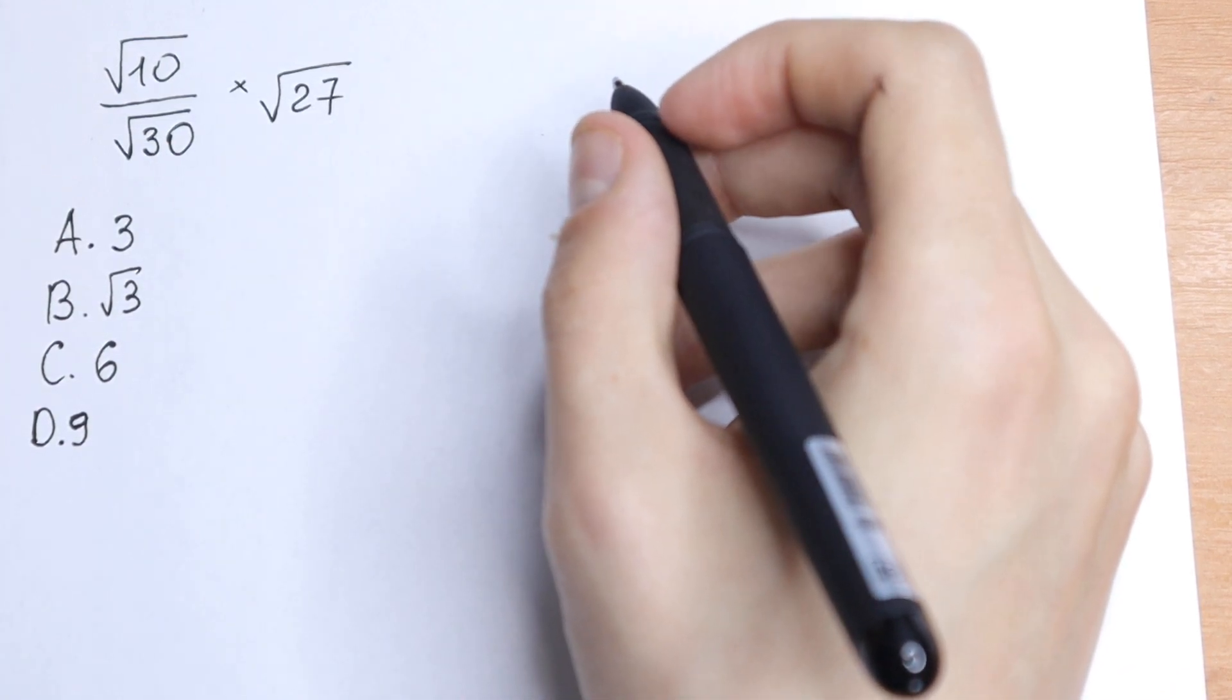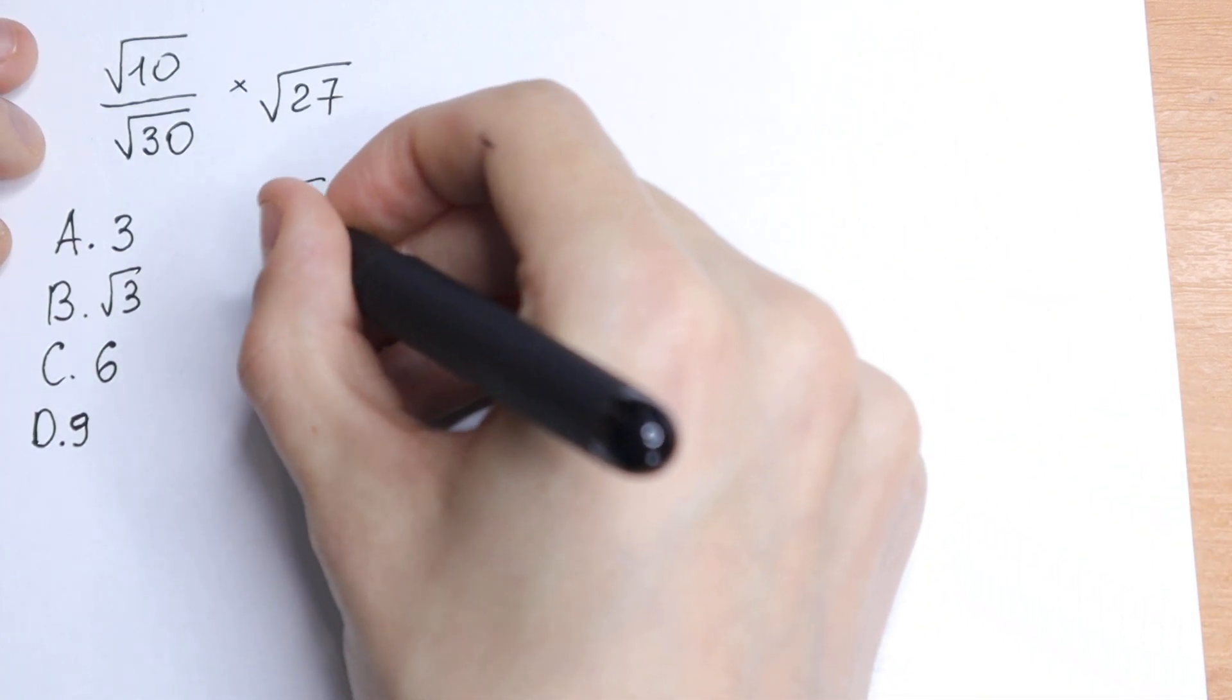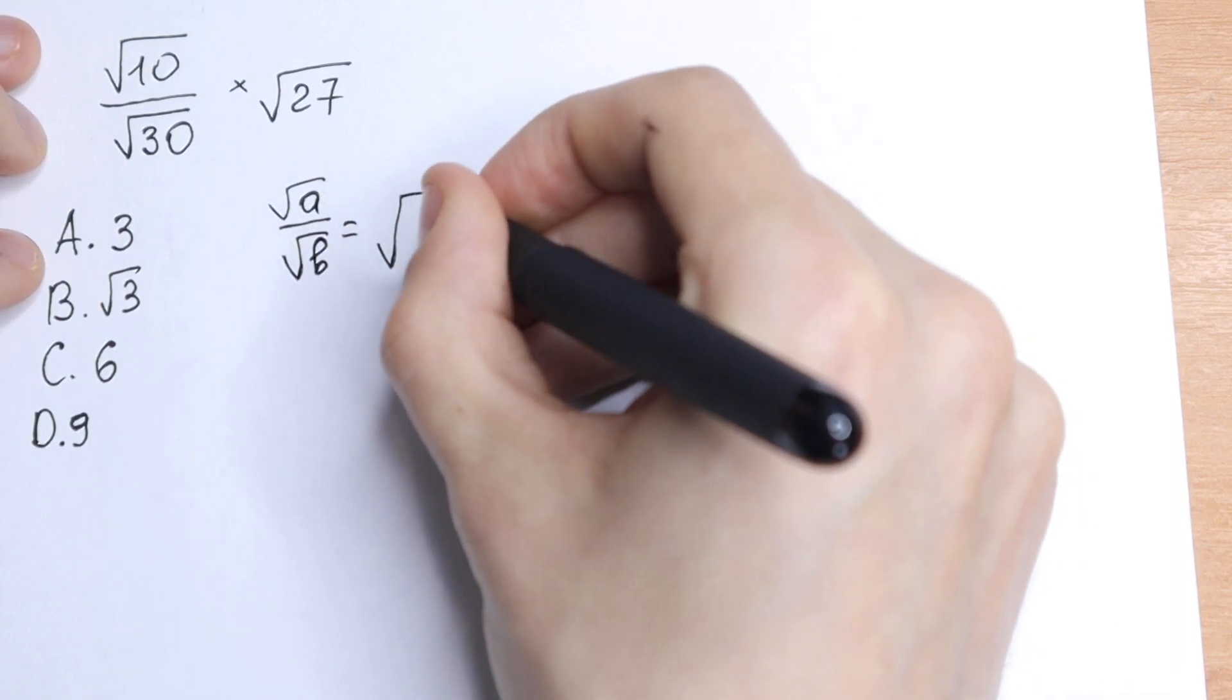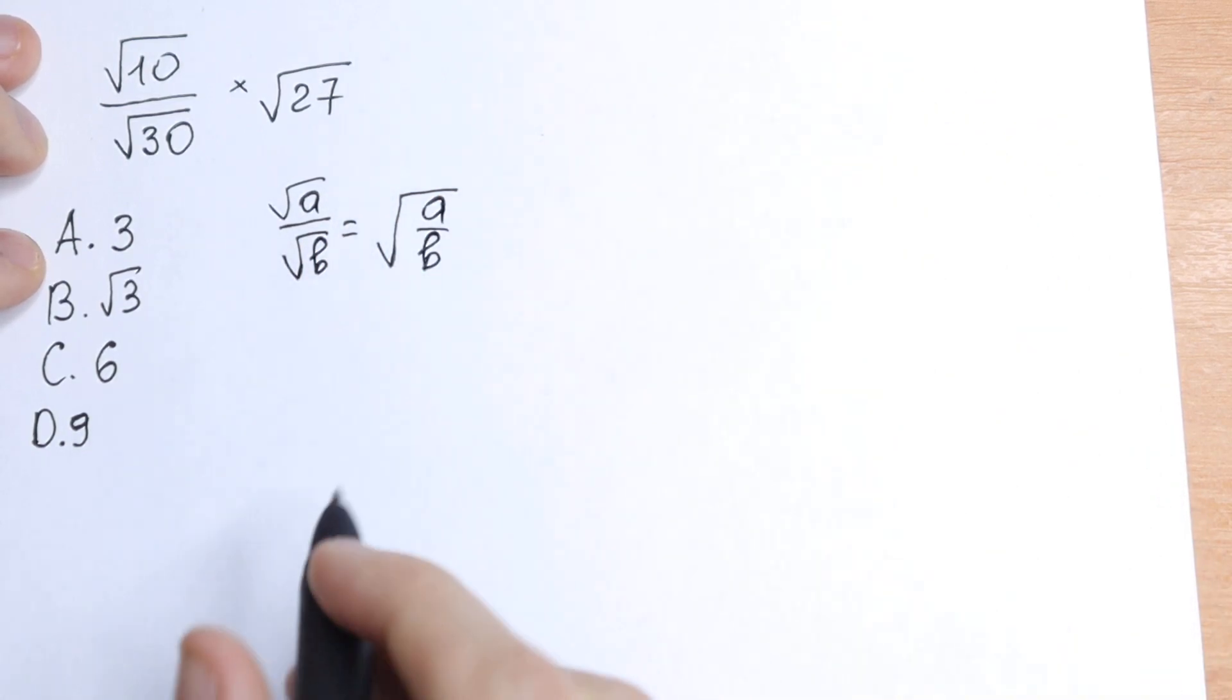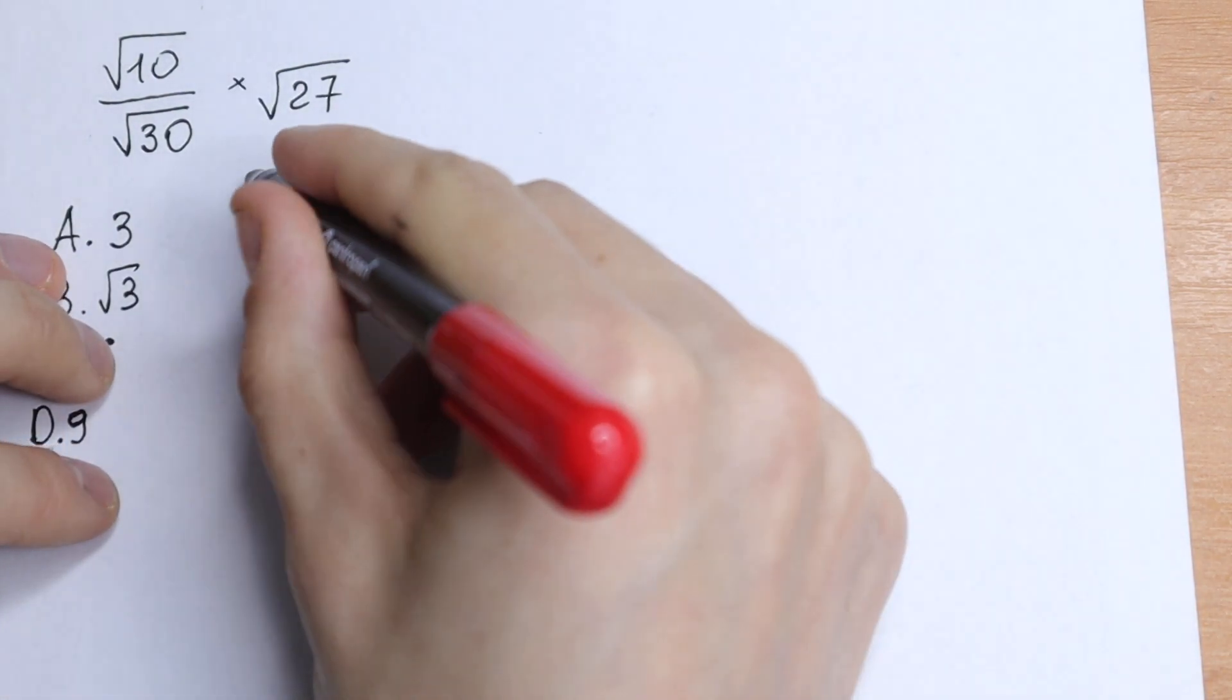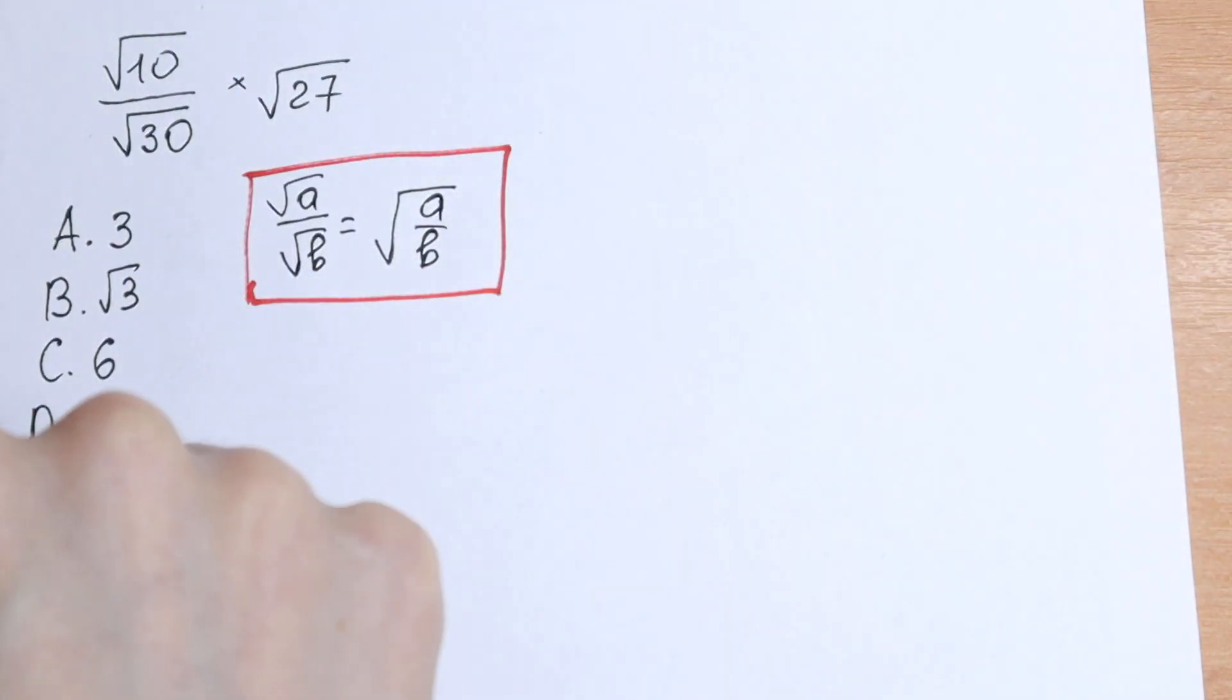Let's learn and remember these rules. First one: if we have square root of a over square root of b, we can write it under one square root sign as a over b. This is a really good case because we use this rule right here. We have square root of 10 dividing by square root of 30. Remember this rule.